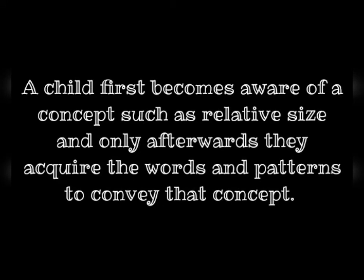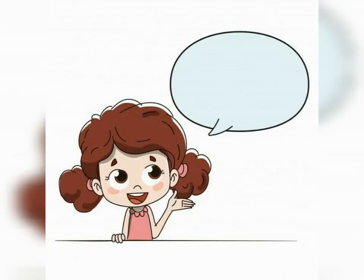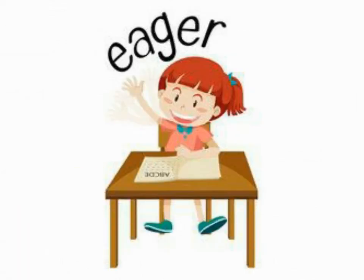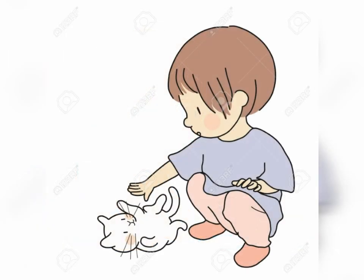In cognitive theory, a child first becomes aware of a concept such as relative size and only afterward do they acquire the words and patterns to convey that concept. It is essentially impossible for a young child to voice concepts that are unknown to them, and therefore once a child learns about their environment, they can map language on to their prior experience. An infant's experience of a cat is that it meows, is furry and eats from a bowl in the kitchen — hence they develop the concept of cat first and then learn to map the word 'kitty' on to that concept.